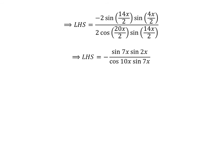Canceling out the common factor of 2 gives: minus sine of 7x times sine of 2x upon cosine of 10x times sine of 7x. Canceling the common factor sine of 7x in the numerator and denominator gives the left-hand side equal to minus sine of 2x upon cosine of 10x, which equals the right-hand side of the given equation. So we have proved the given equation.